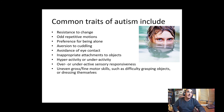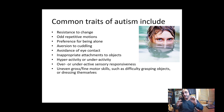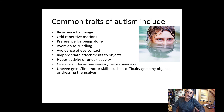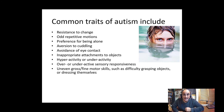People with autism may have uneven gross or fine motor skills. Fine motor skills involve small precise movements, while gross motor skills involve larger movements. Tasks like grasping objects or dressing themselves — such as doing up a button — can be challenging and are skills that need to be worked on and taught.